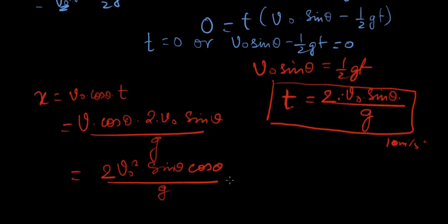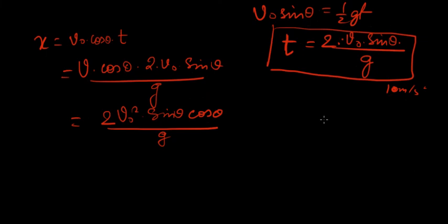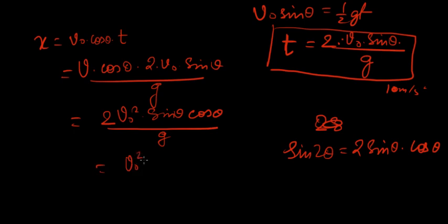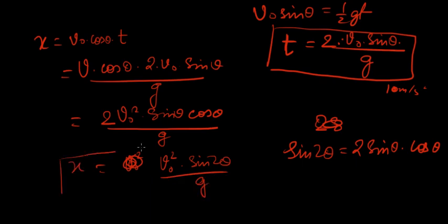What do we know about this from trigonometry? What is sine of 2 theta equal to? It's 2 sine theta cos theta. So that's what we have here, 2 sine theta cos theta. So let's put that here. V naught squared times sine of 2 theta over g is the horizontal distance traveled.